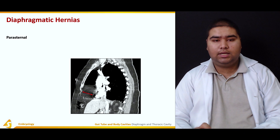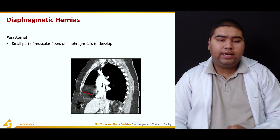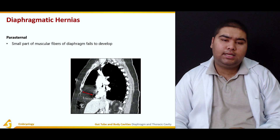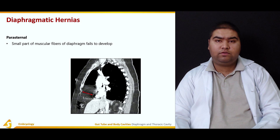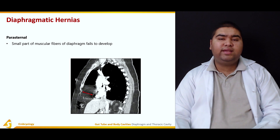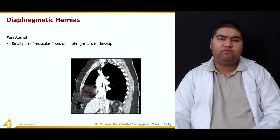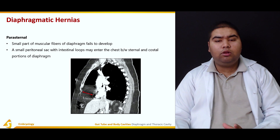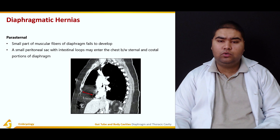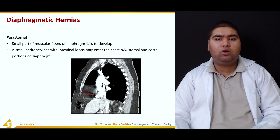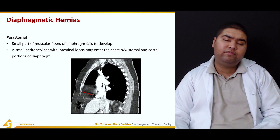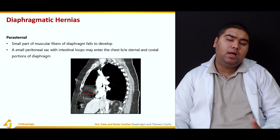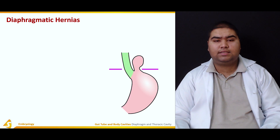In parasternal hernia, a small part of the muscular fibers of the diaphragm — which come from C3, C4, and C5 somites — fail to develop. As a result, a small peritoneal sac with intestinal loops may enter the chest between the sternal and costal origins of the diaphragm, with intestinal contents found within the chest.